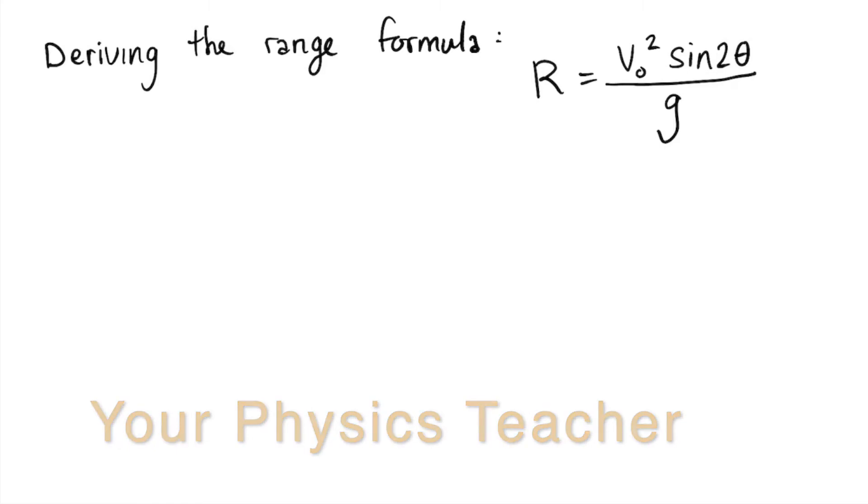Hello, welcome to your physics teacher. In today's lesson, I'm going to be showing you how we can derive the range formula given by R equals v initial squared sine 2θ all divided by g.